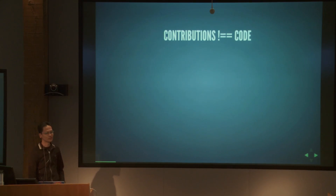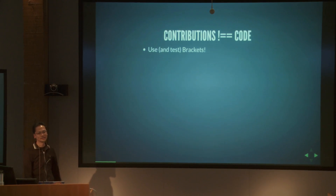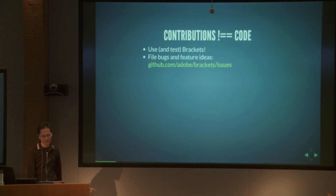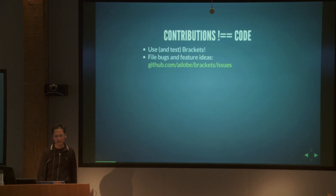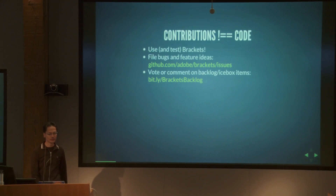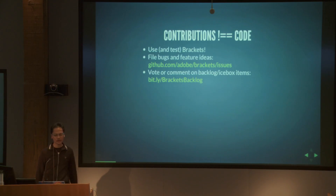There are lots of ways to contribute as with any open source project that isn't code. Just using Brackets, testing it, and telling us what you like and don't like is very helpful. Any bugs or feature ideas you have, file them in our GitHub issue tracker. For feature ideas, we take them from the issue tracker and put them in the Trello backlog that Adam mentioned, which is a public backlog.